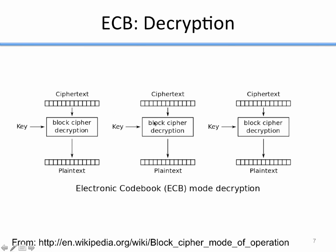Decryption is also intuitive. You break up your ciphertext into blocks and run each through the block cipher decryption operation. Block ciphers have both an encrypt and a decrypt operation — you have to specify which one you're doing. Here we use decryption to convert each ciphertext block back into its corresponding plaintext block.